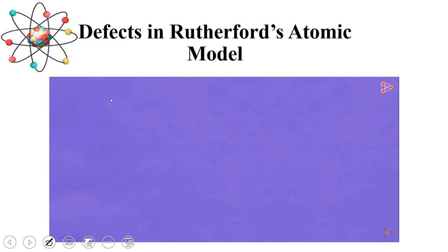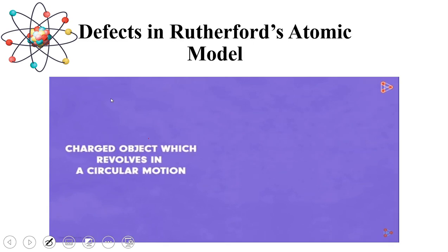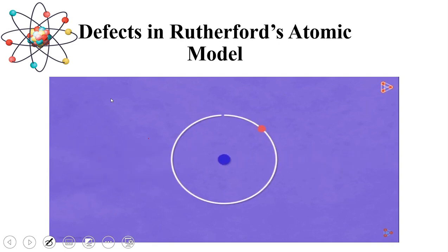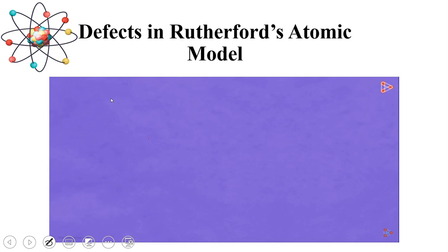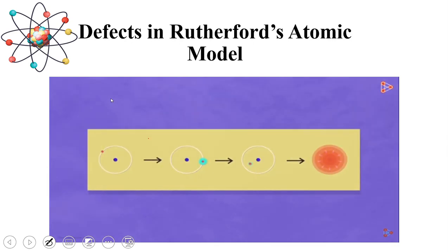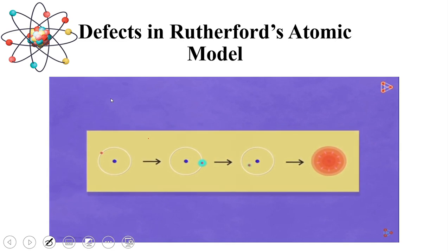There were some issues. Number one issue was, according to the classical theory of radiation, that a charged object when it moves in a circular path, it gains speed, its speed will increase, its acceleration will increase. Ultimately, its energy will start decreasing, because as the speed increases the energy will be released, and the electron will fall into the nucleus, and the atom becomes unstable.